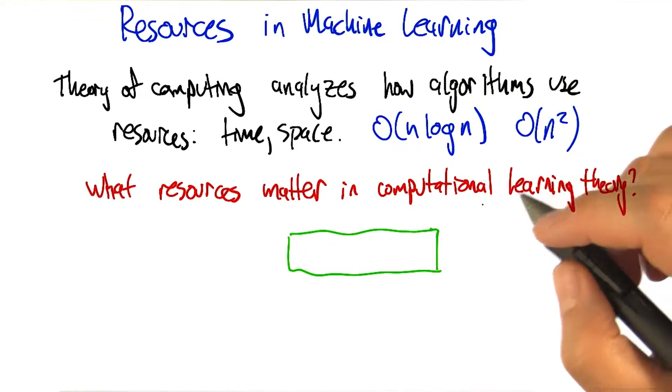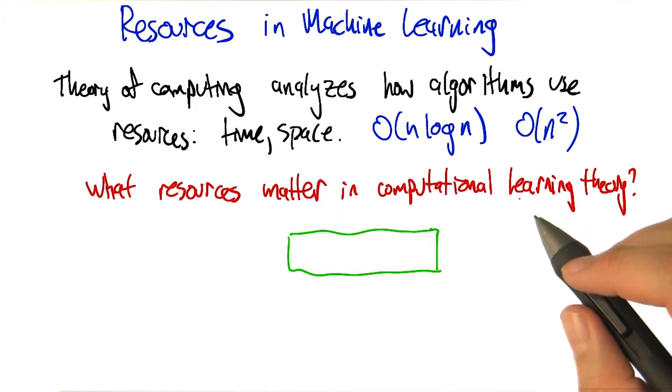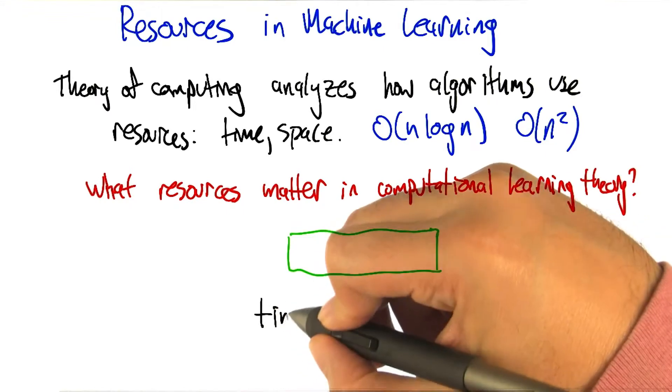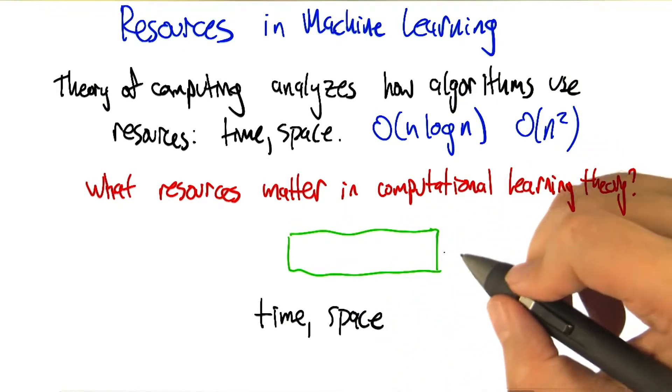All right, so Charles, what do you think would be some reasonable resources to try to manage in a learning algorithm? Okay, well I was thinking of three, because three is my favorite number. Two of them are what you already have written up there: time and space.